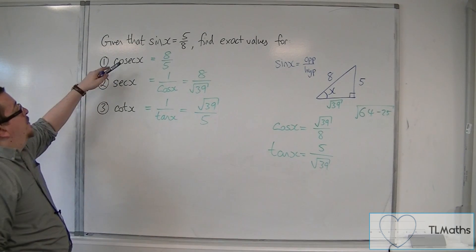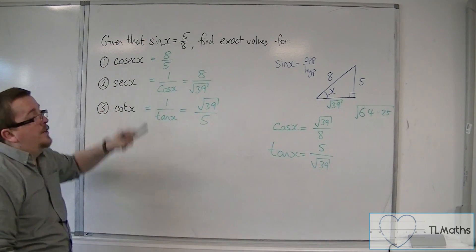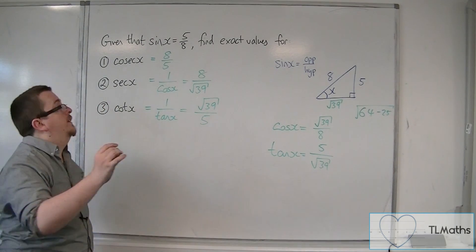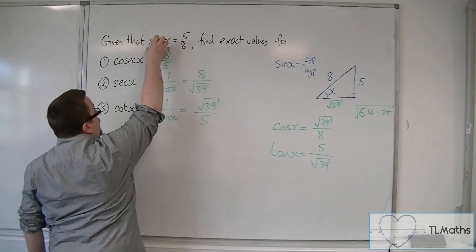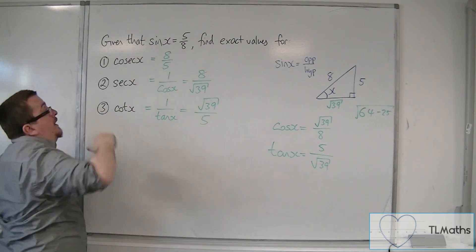So that is how we can work out exact values for cosec, sec, and cot, just given one trig identity or one trigonometric function and what it is equal to.